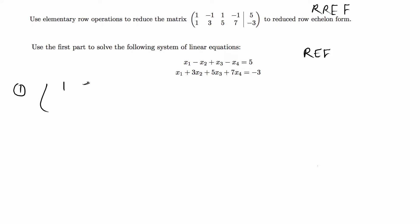We have the matrix 1, -1, 1, -1 equals 5 and then 1, 3, 5, 7 equals -3. We want to have the 1 here is fine and we want to get the second row to be 0 as the leading number. The first operation that I'm going to do is I'm going to subtract r2 from r1, so the first row from the second row.